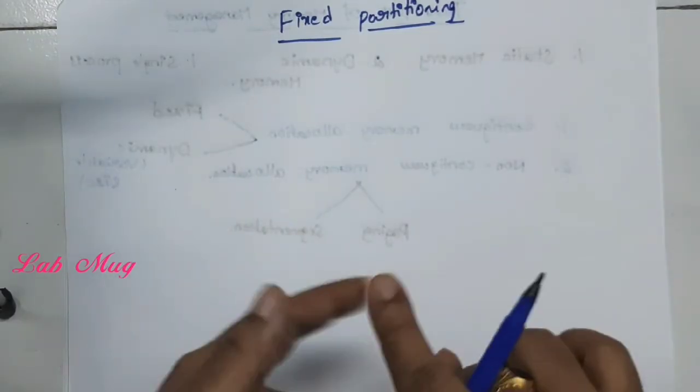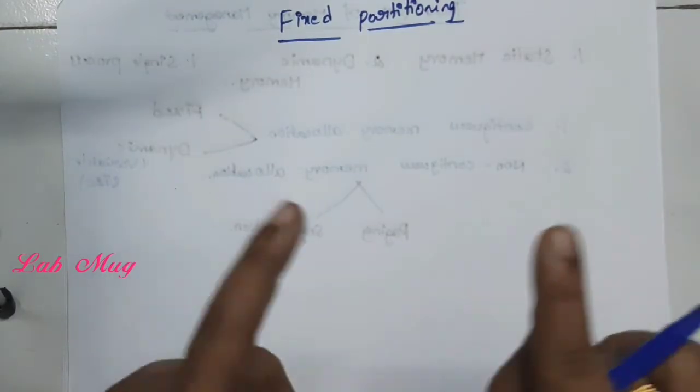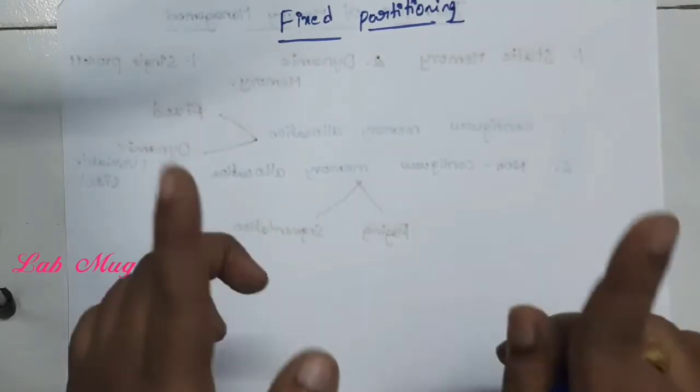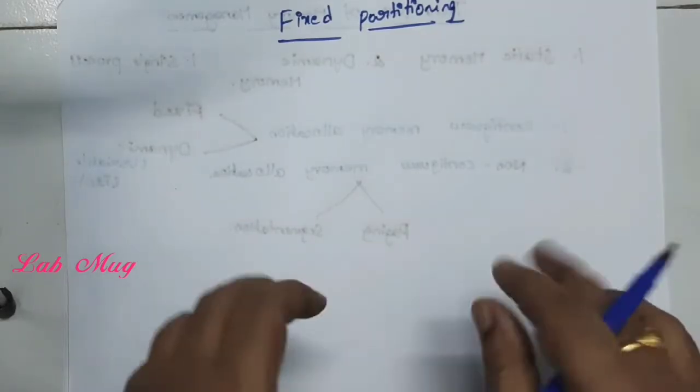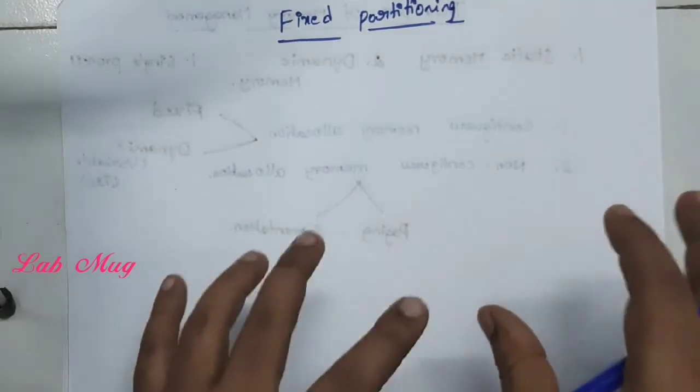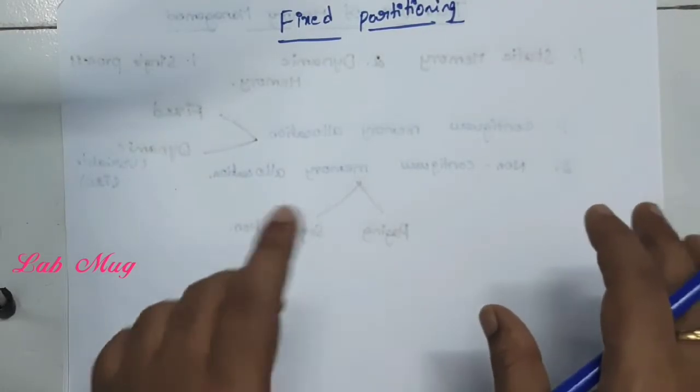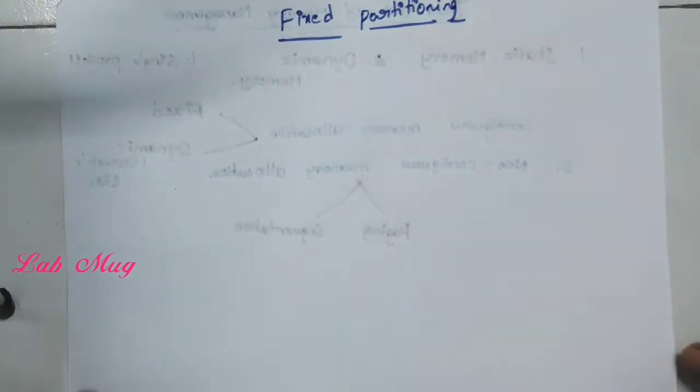In this technique, each process is allocated a continuous section of memory. That is the first point.